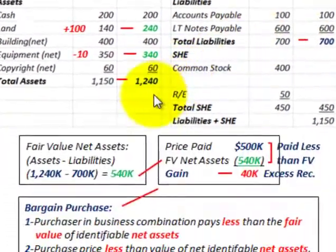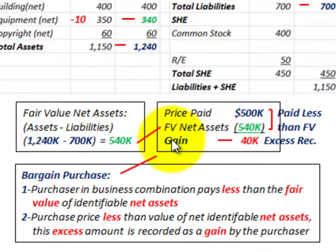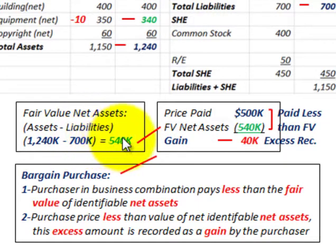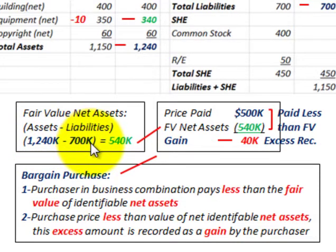Now let's calculate the gain. The first thing we have to do is determine the fair value of our net assets. We take our assets at fair value minus the liabilities at fair value, and that gives us the fair value of our net assets. Our assets are $1,240,000 and the liabilities are $700,000, so the fair value of our net assets is $540,000.